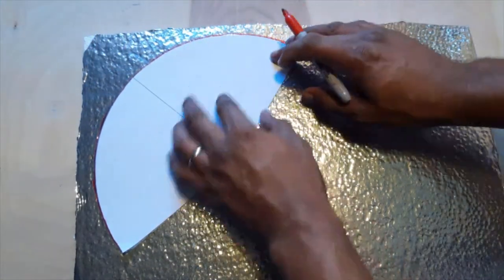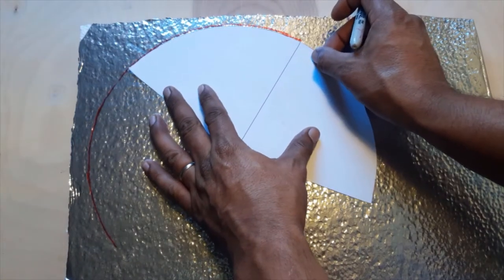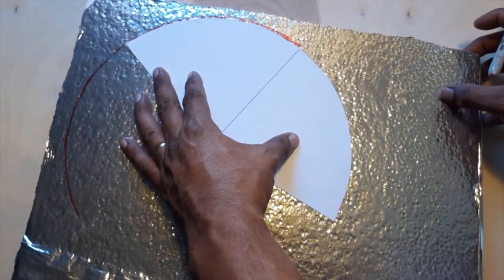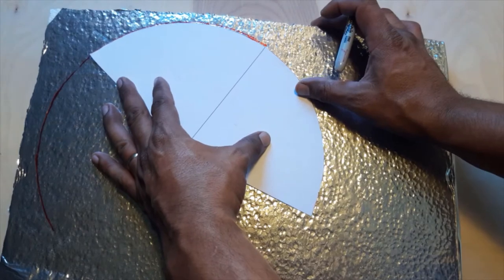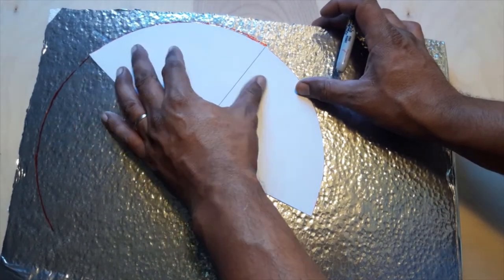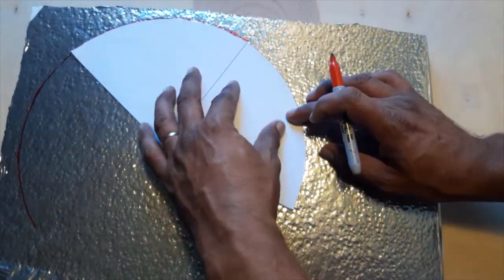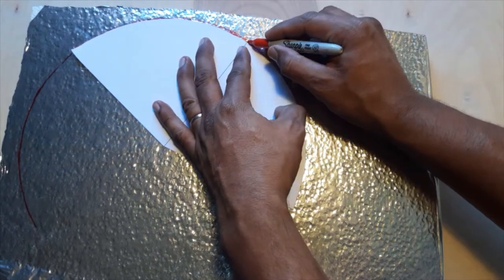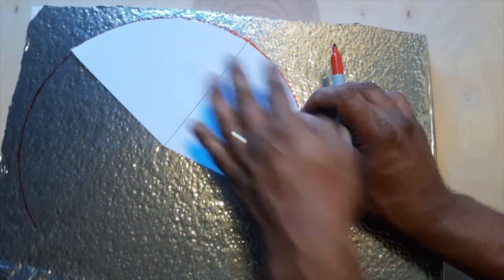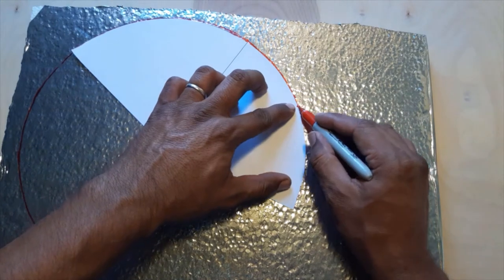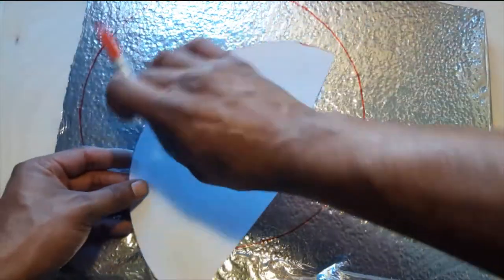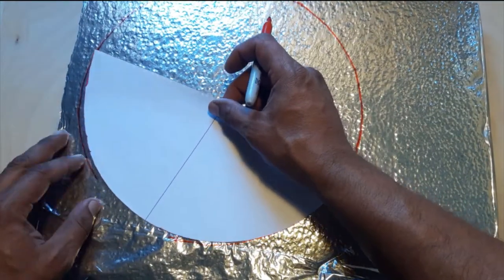Next, use the center line from the template and locate it where the first circle section ended. Make sure the inner corner of the template lines up with the circle segment marked at first. Once everything is lined up, trace the second section and repeat until the complete circle has been traced.